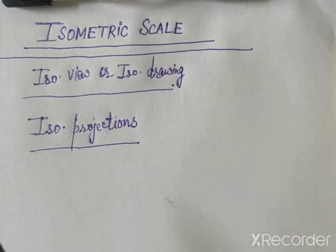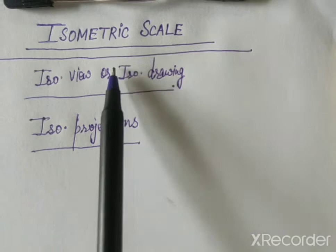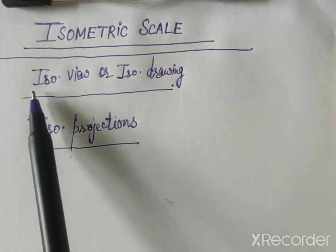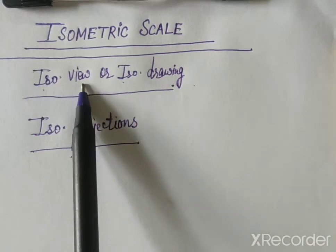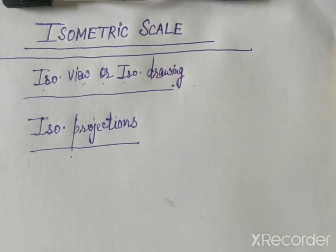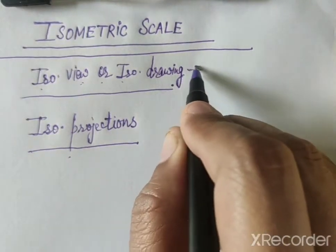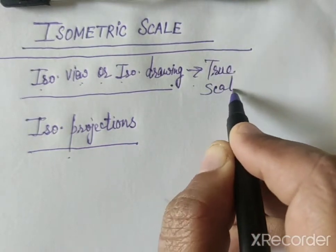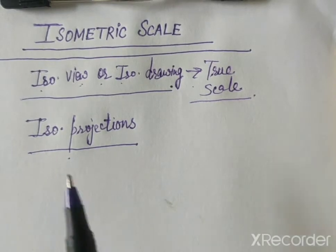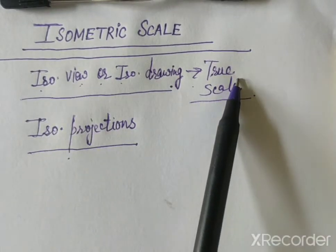There is actually one point which you need to keep in mind that whenever we want to draw the isometric drawing or isometric view of any object, we will use the true scale or the actual scale. All the lengths will remain as it is.